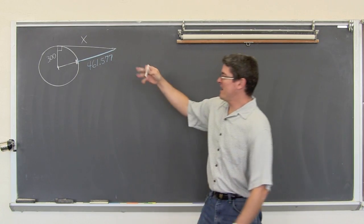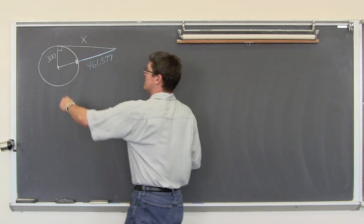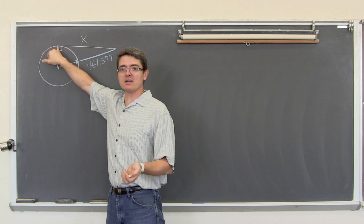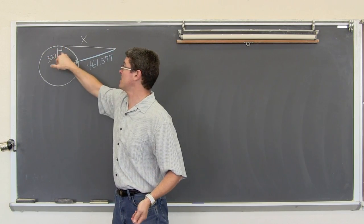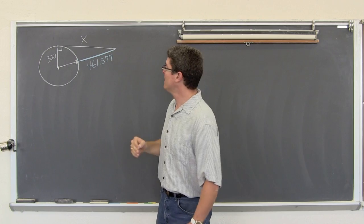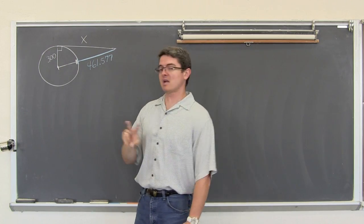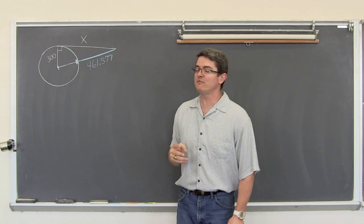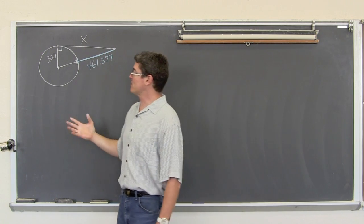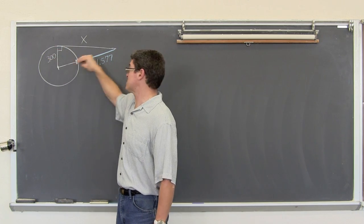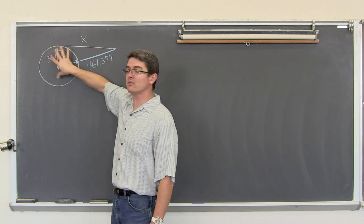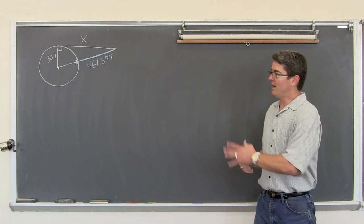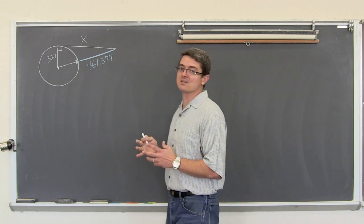For our second example, we have a circle with a radius of length 300. We have a tangent line to the circle — it is a tangent line because it intersects once and the line is perpendicular to the radius. We have a hypotenuse cut up in two different parts, and the only labeled part is the segment extending outside the circle of 461.577. This could be some kind of planetary word problem with a satellite, or a wheel with a tangent line representing a distance traveled.